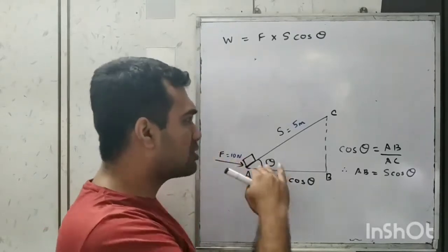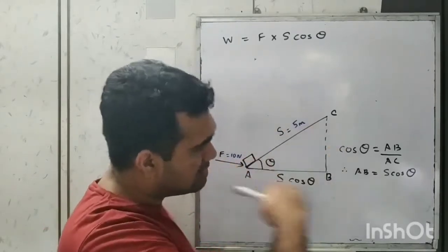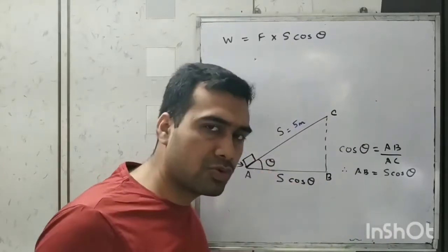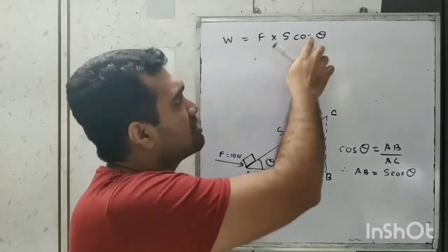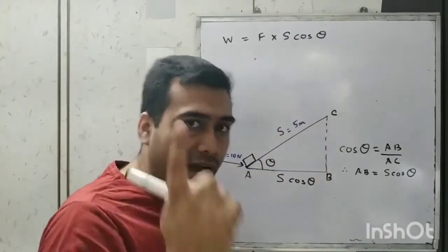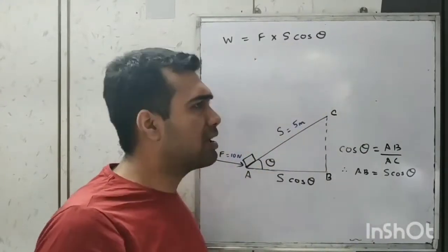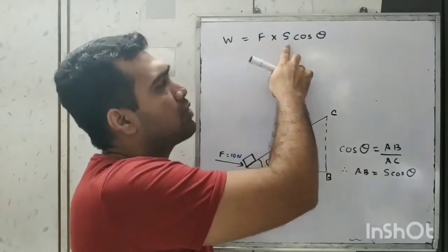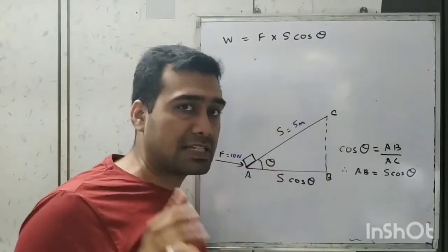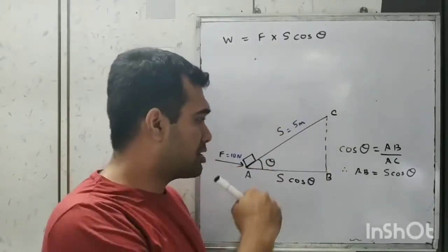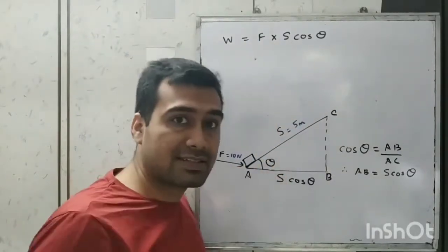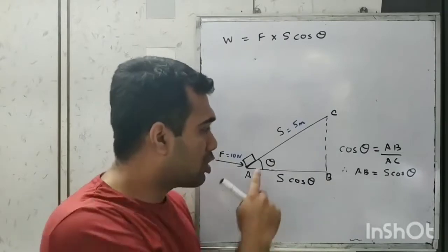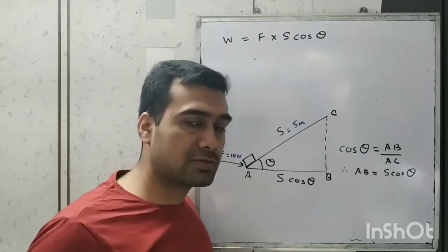If the direction of force and displacement is the same, then theta is 0 and cos 0 is 1, so the formula becomes the usual W = F × S. But if the directions are different, we need to take cos theta into account.